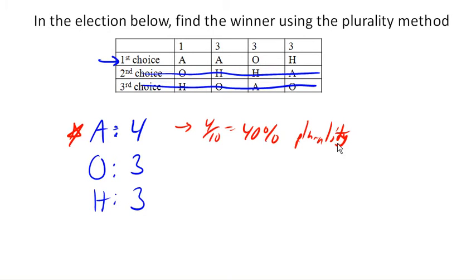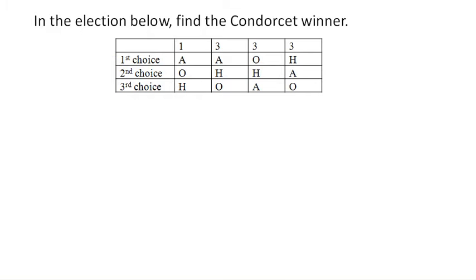So let's talk about Condorcet winners. Condorcet looked at voting and we're going to look at preferences if there was only two choices. So let's compare A versus O. So if it was A versus O, these people would prefer A, these people would prefer A, these people would prefer O, these people would prefer A. Now remember, we're ignoring H as an option.